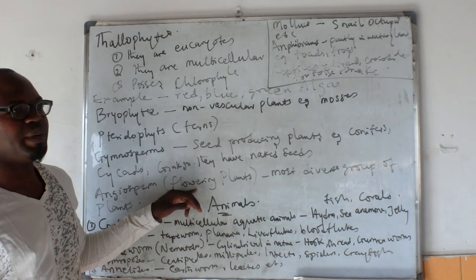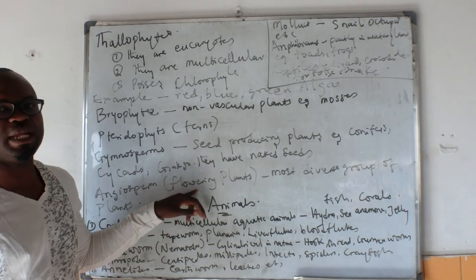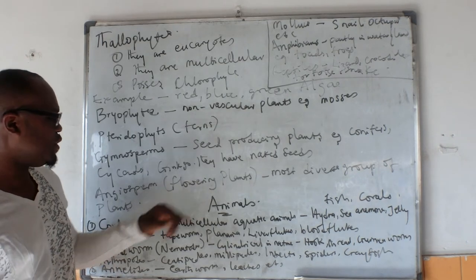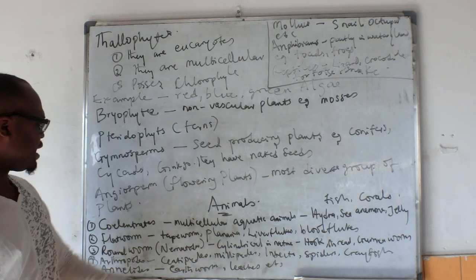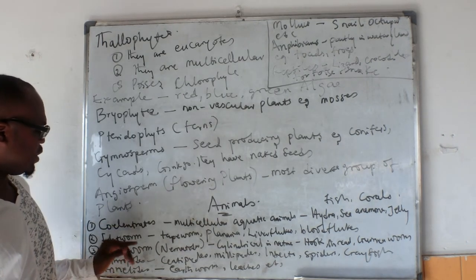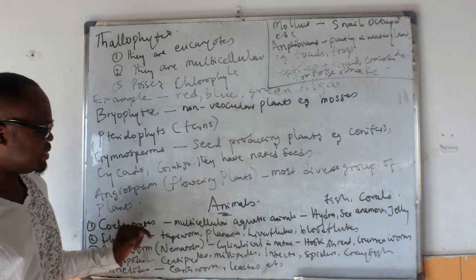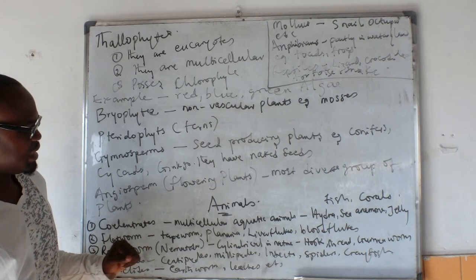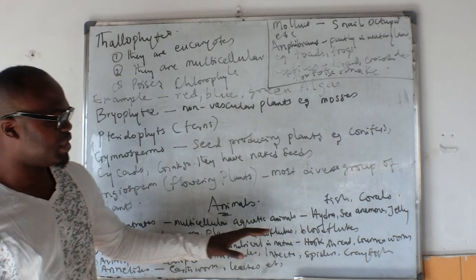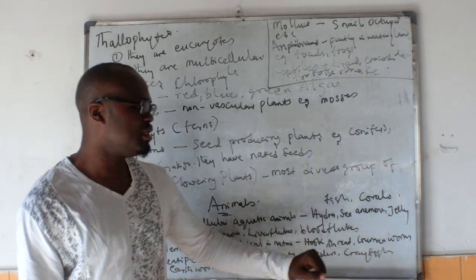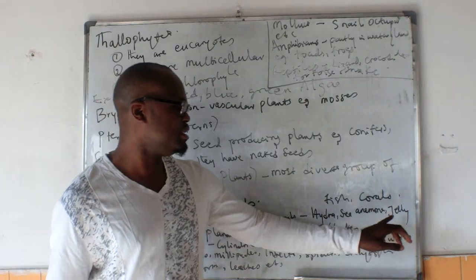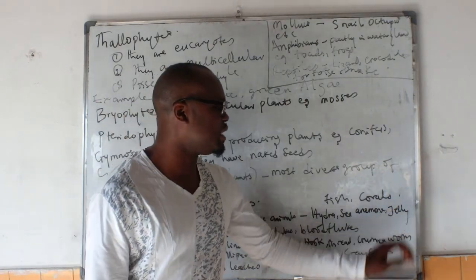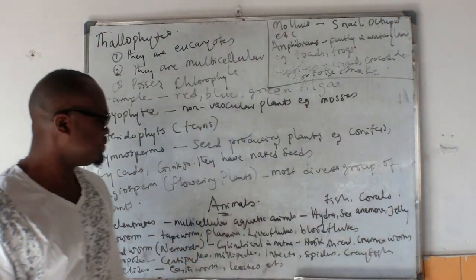The gymnosperms are those plants that have naked seeds, whereas the angiosperms are the flowering plants, which encompasses most of the plants that you see in the world. Then under animals, we have the coelenterates, which are multicellular aquatic animals like the hydra, the sea anemone, and the jellyfish, as well as the corals.